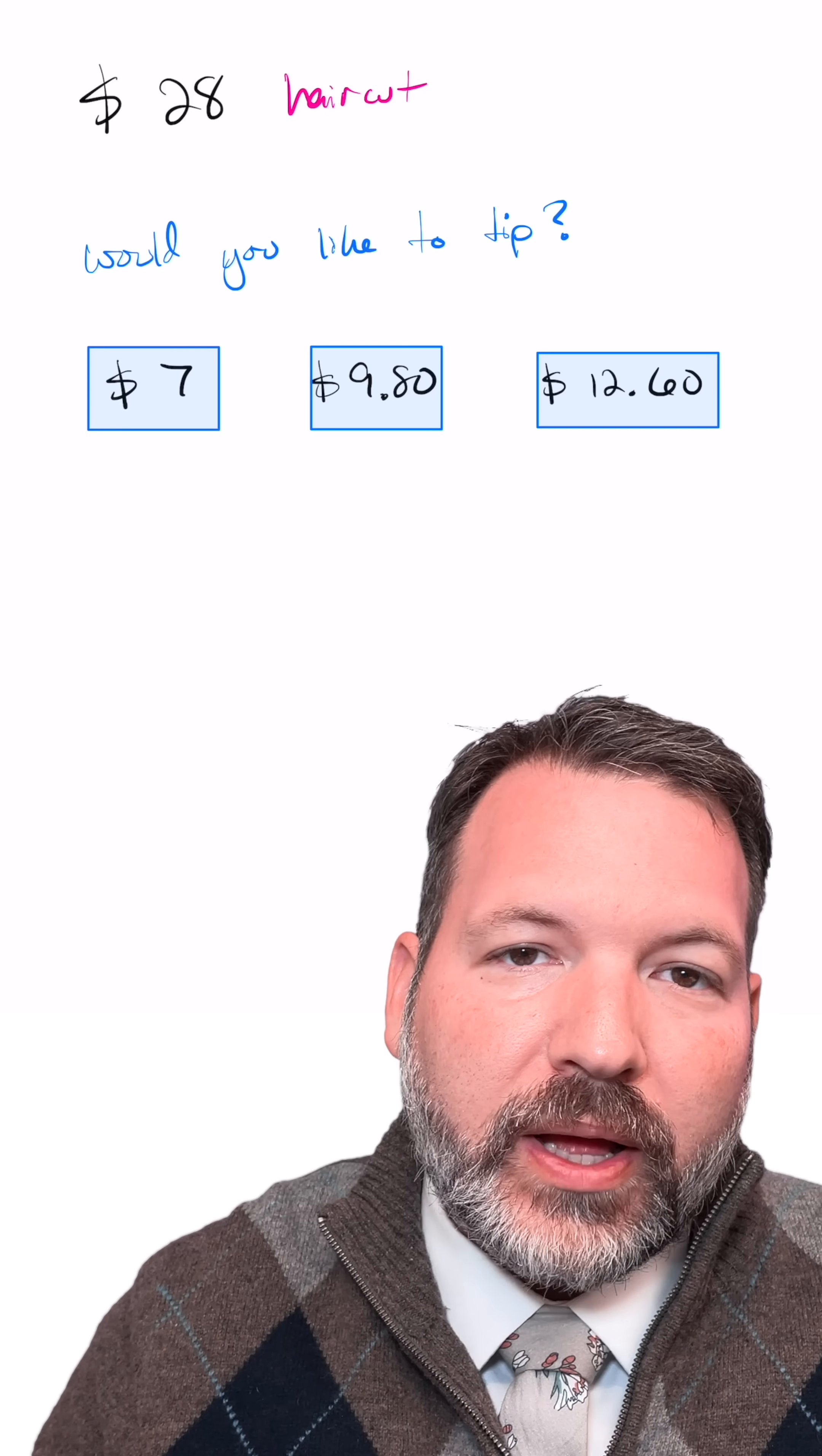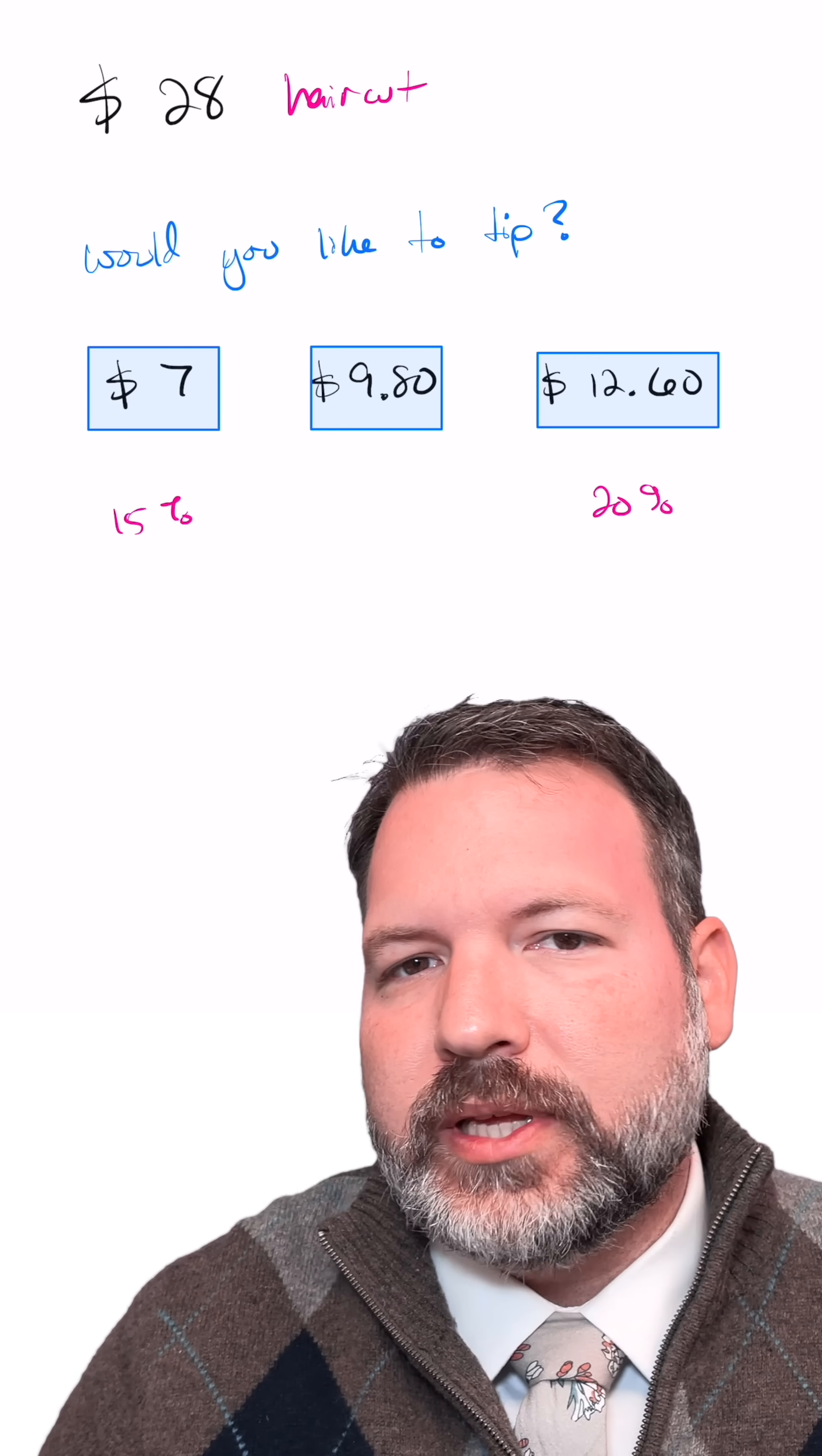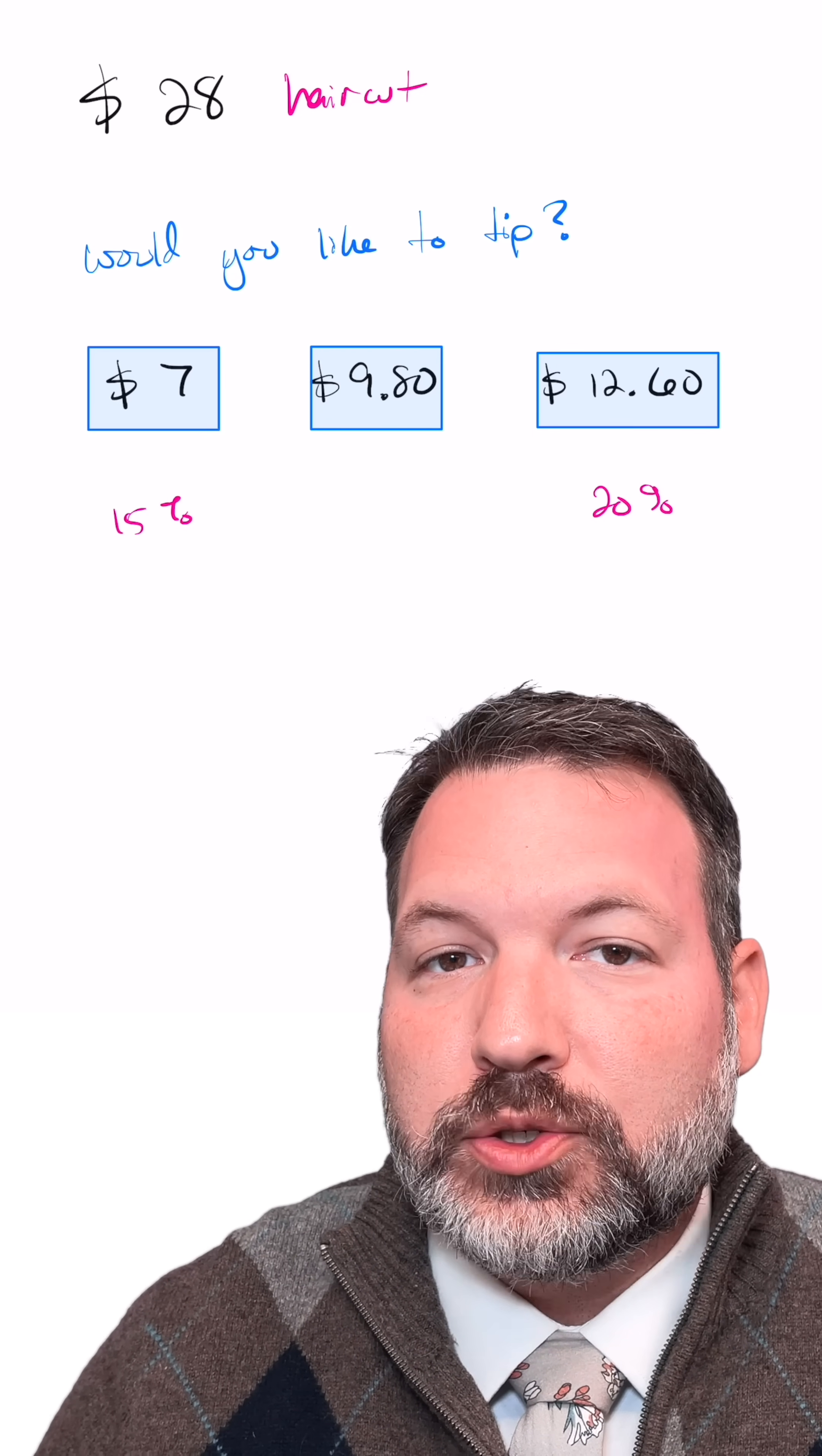Normally, the way that these three buttons are set up is you have a 15% button on the low end. This makes you feel like a cheapskate. Nobody wants to hit the lowest button. And then maybe the top end button is a 20% button. And maybe if it's a particularly good haircut that day, or I'm just feeling flush, I'm going to go ahead and hit that 20% button.